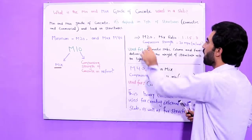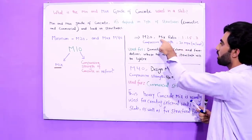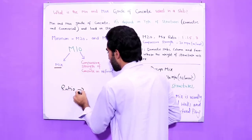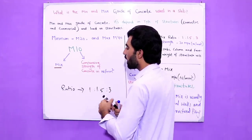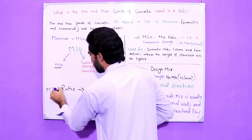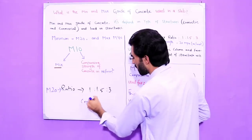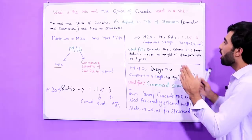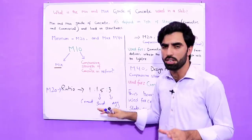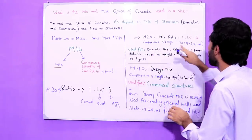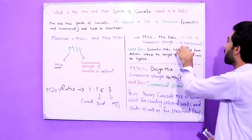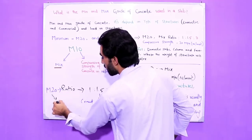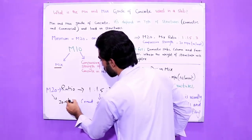Coming to the main point: M20 grade of concrete. The mix ratio for M20 is 1:1.5:3, where 1 is cement, 1.5 is sand, and 3 is aggregate or crush. The compressive strength of M20 is 20 Mega Pascal, which means 20 Newton per mm squared.